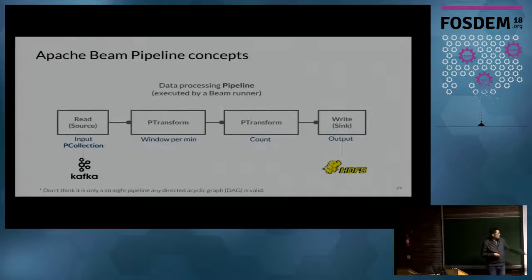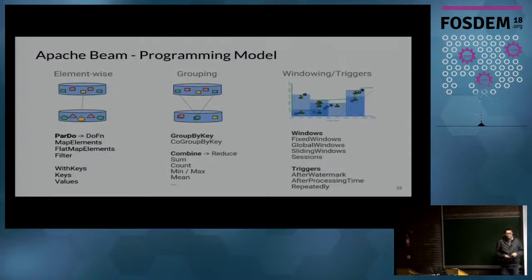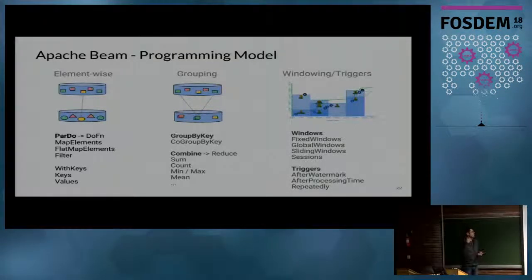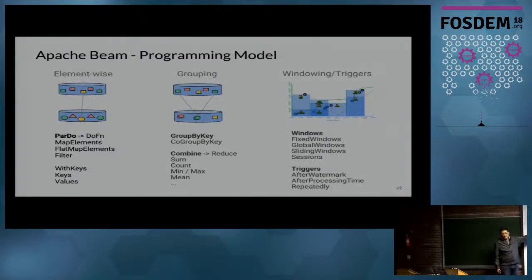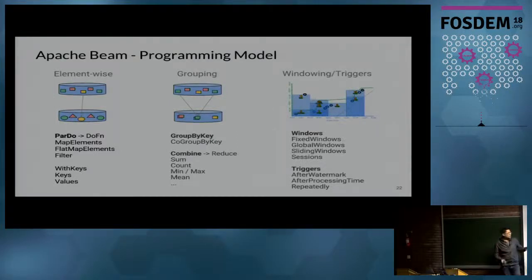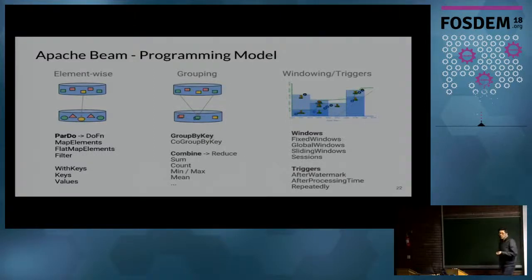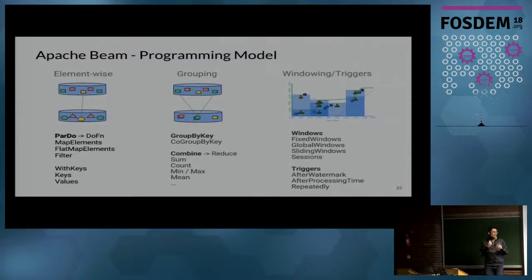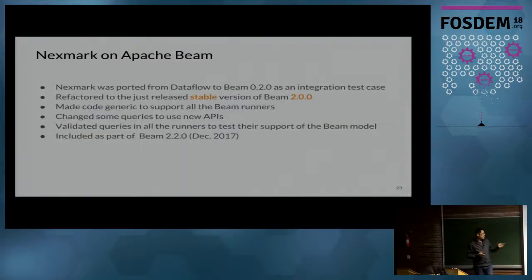Basically, a program in Beam is a collection of steps where you take an input, do all these transformations — windowing and so on — and go to an output. We have families of processing elements: element-wise transformations like map in MapReduce, grouping transformations like shuffle-and-reduce, and windowing and triggers that allow us to control when aggregations are computed.